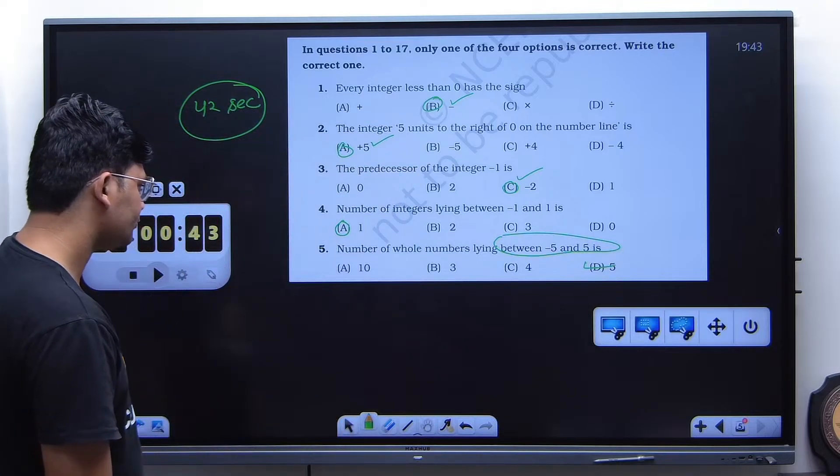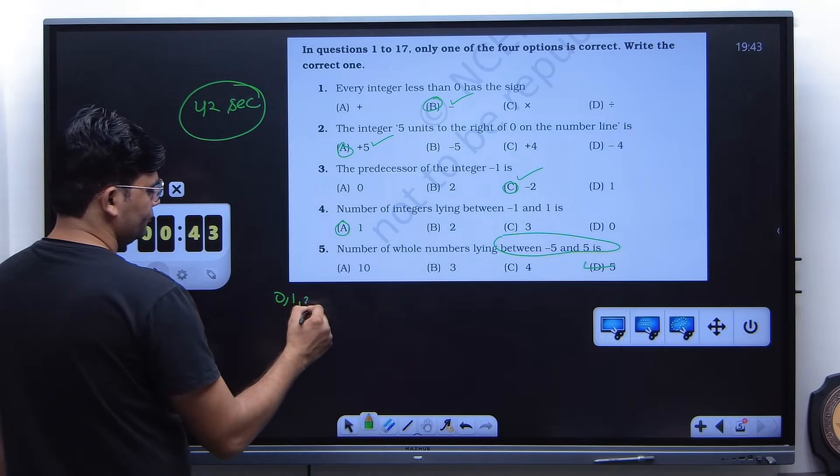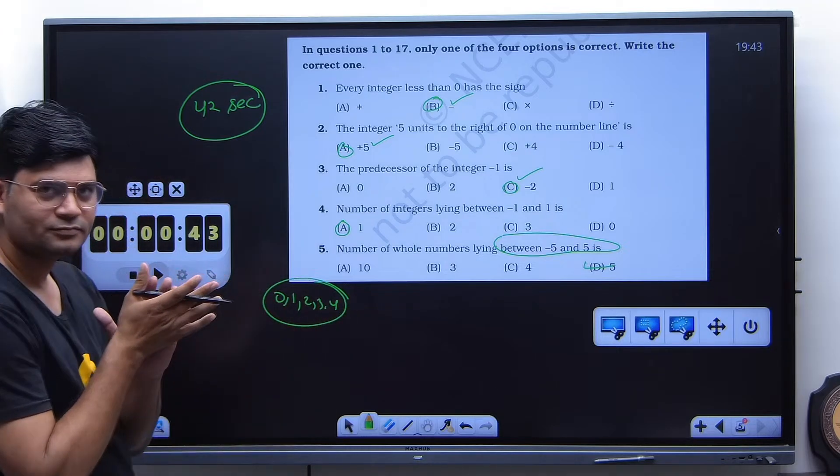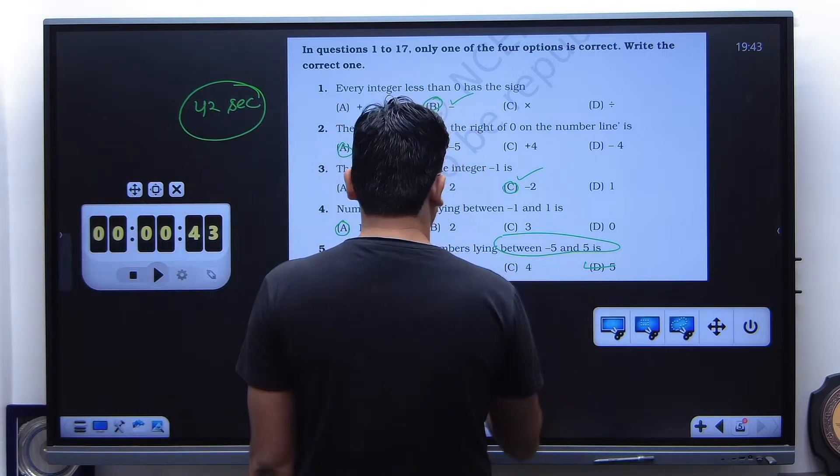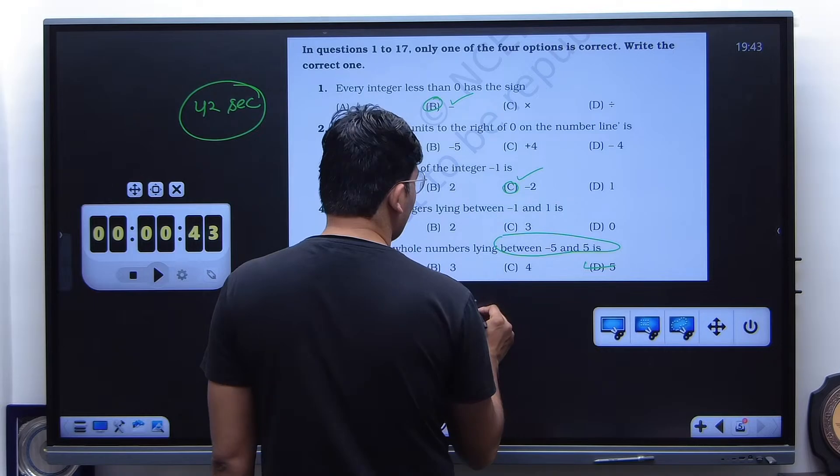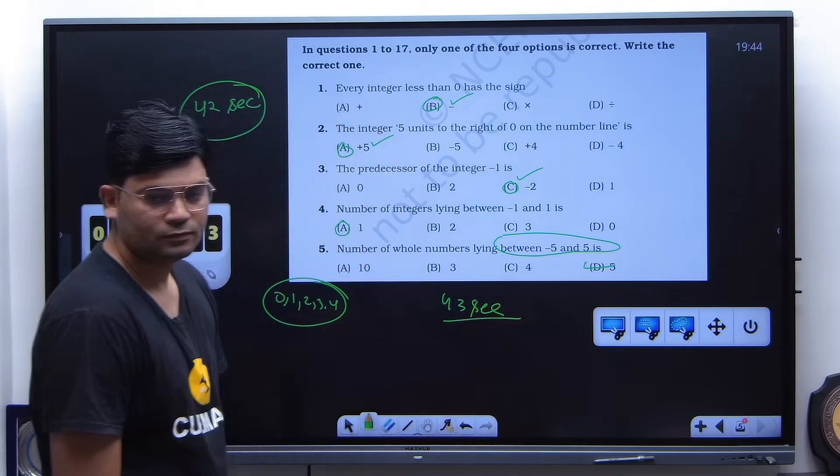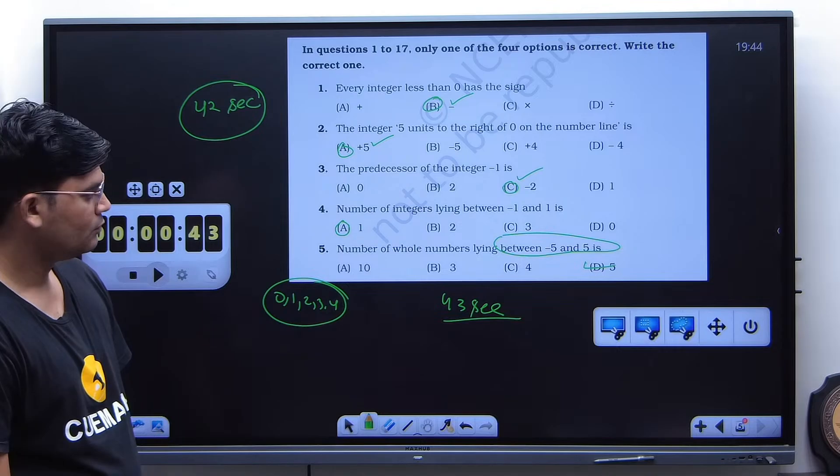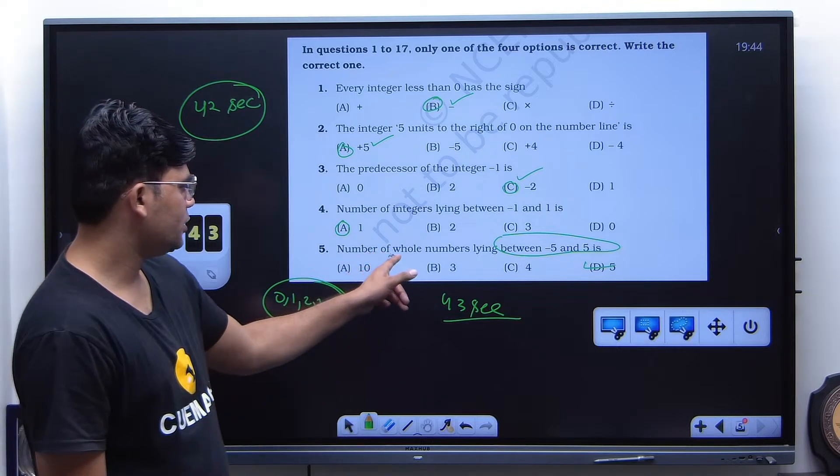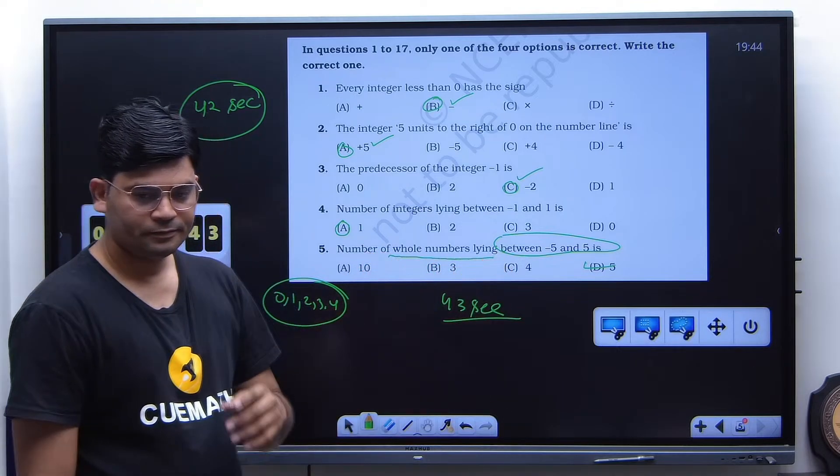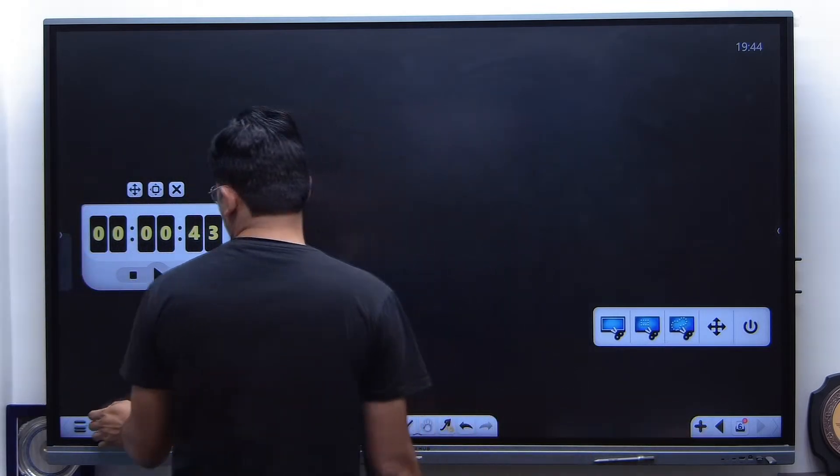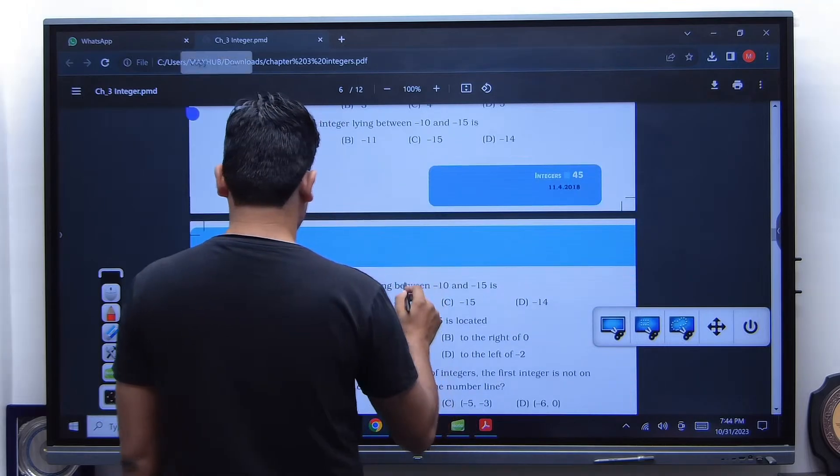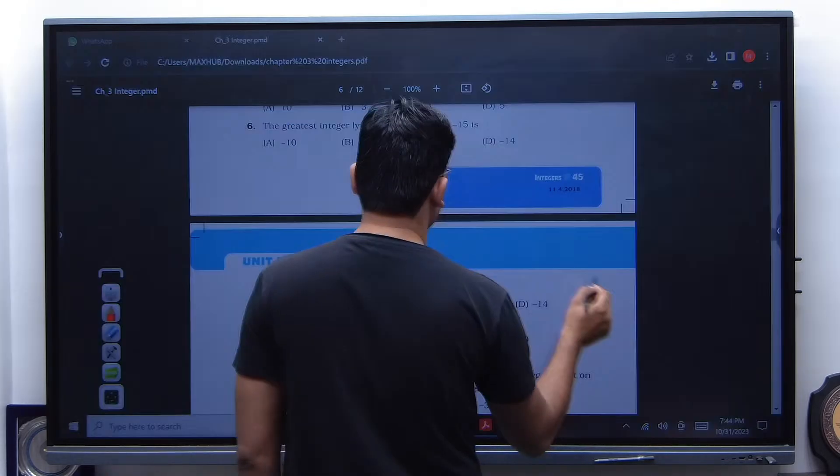Yeah, so 0, 1, 2, 3, 4. These are five correct. Wonderful. So 43 seconds you have to. Well done. So I am going to give you next five questions here.